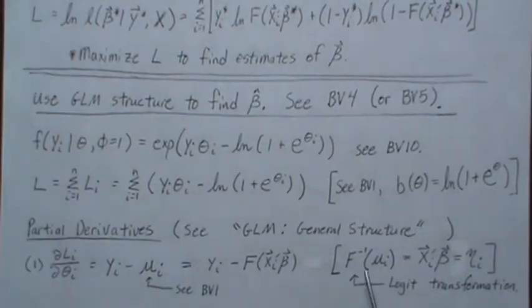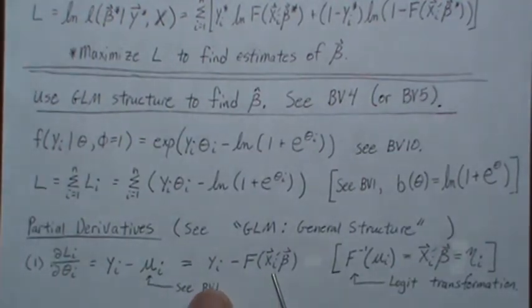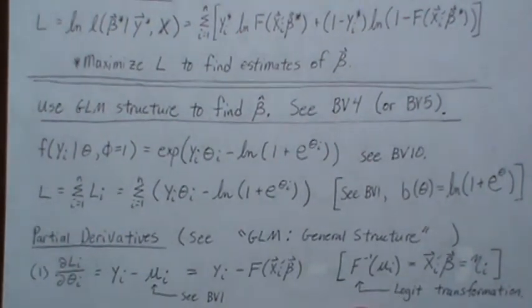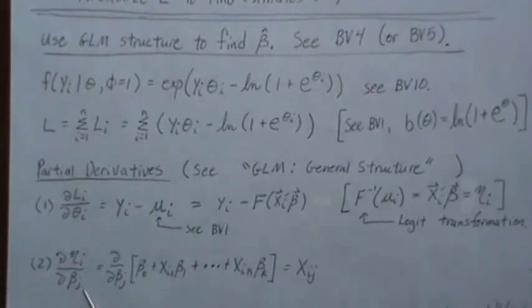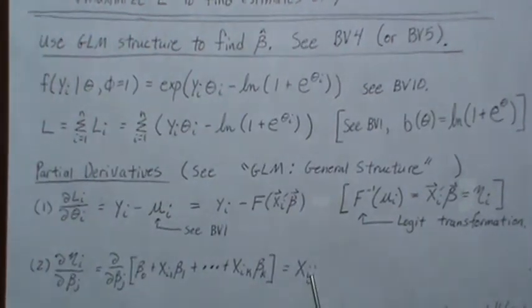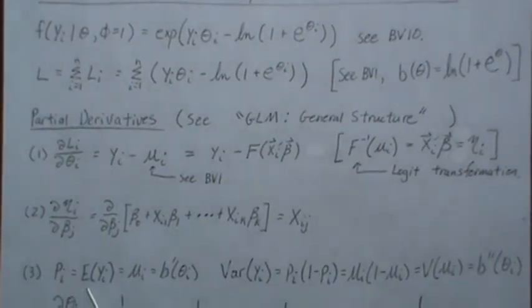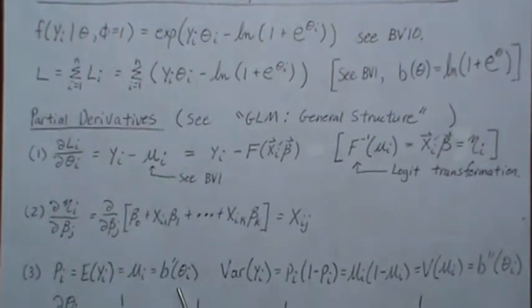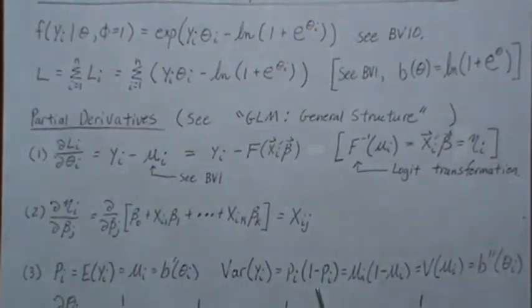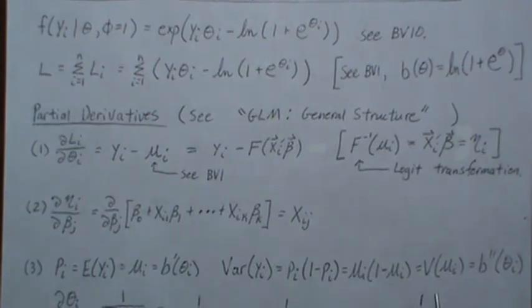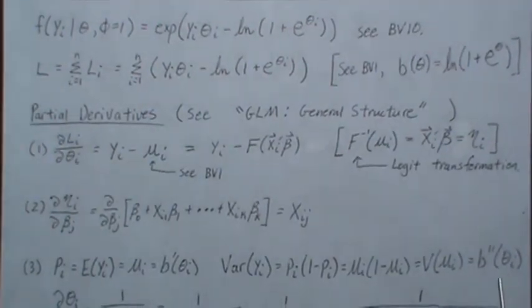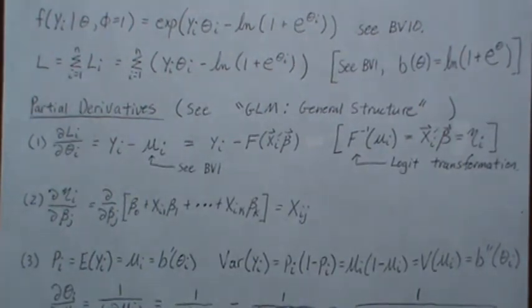So we can think of that as F of this linear combination of our covariates, right, from page one. If we transform it, the logit transformation transforms the mean to get our linear combination, we generically call it eta. So when we take the derivative of eta with respect to beta, we find the jth beta, take the derivative, and that's the coefficient in front of it. Pi is the mean, which we called mu_i, which is the first derivative of our log partition. The variance of Y_i is p times q, or p times one minus p, which are the means. And since this is a function of the mean, that's what we call the variance function, and it's actually the second derivative of the log partition. So this is all background from BV1.